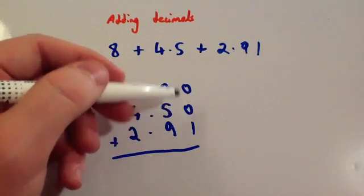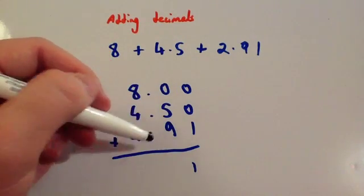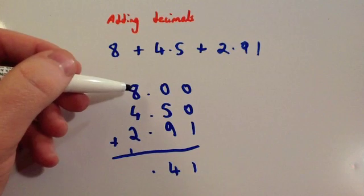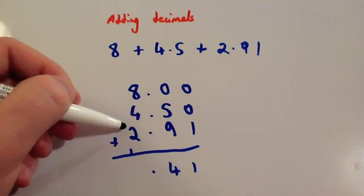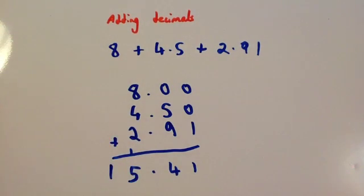So, 0 plus 0 plus 1 is 1. 0 plus 5 plus 9 is 14. Put down, carry the 1. 8 plus 4 is 12, plus 2 is 14, plus 1 is 15. So, the answer would be 15.41.